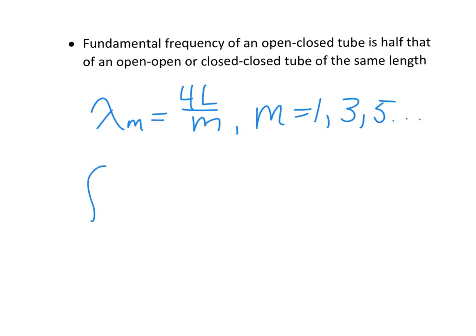Your frequency will equal M times the speed over 4L. It's still going to be M times the fundamental frequency. But once again, M is only equal to odd numbers. So one, three, five keeps on going.